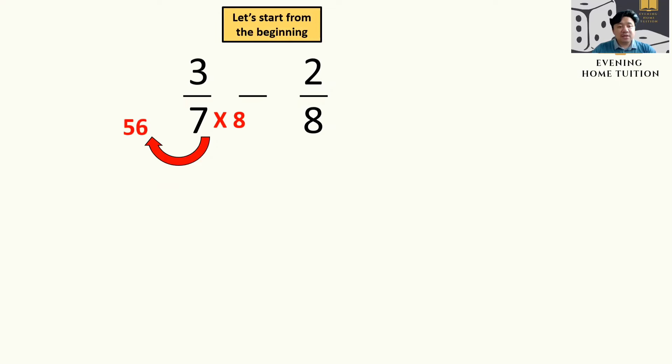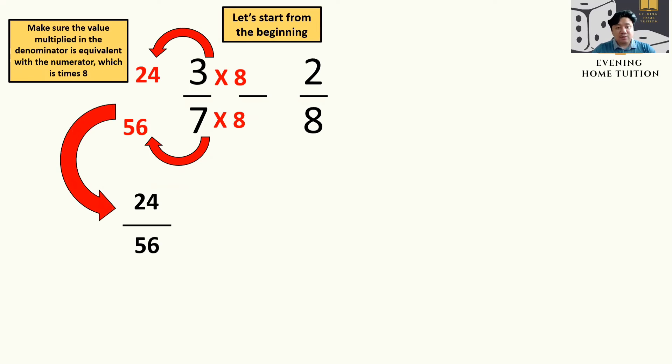So 7 times 8 equal to 56, and make sure that whatever you multiply with the denominator must also be multiplied with the numerator, the number above it. So here times 8. 24 over 56, you bring down.